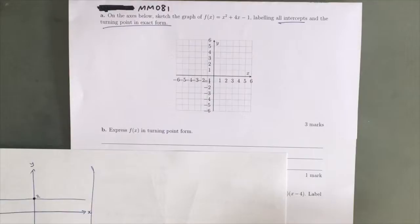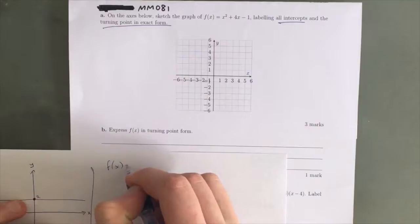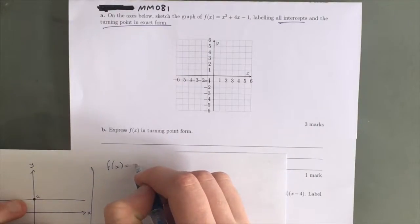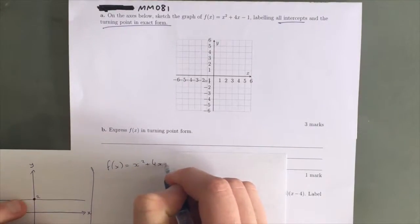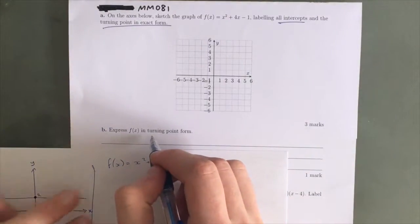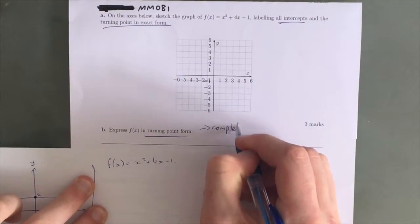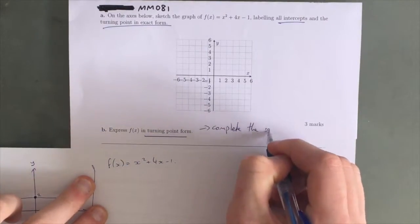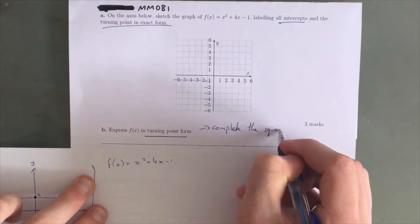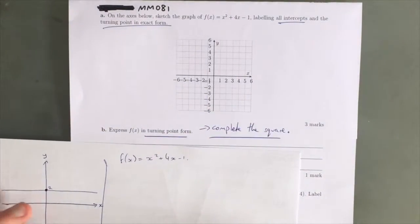Part B asks us to express f of x in turning point form. Let's start by rewriting the regular equation: f of x equals x squared plus 4x take 1. We have to change it into turning point form, and the way we do that is by completing the square.